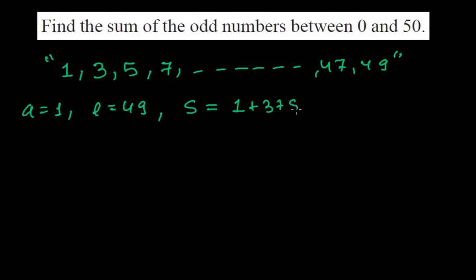1 plus 3 plus 5 dot dot dot plus 49. Now we need to find this sum. That we don't know, that's why I mark here as unknown.